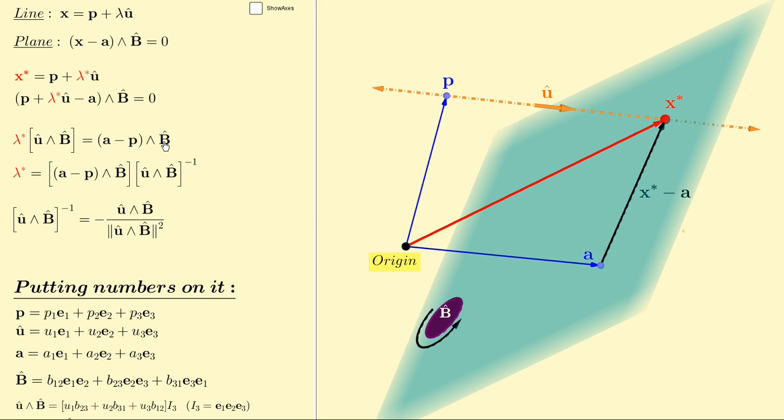To solve that, we multiply both sides by the multiplicative inverse of u hat wedge b hat, and on this side, this goes away, and we end up with lambda star is equal to, well, you can read it here.